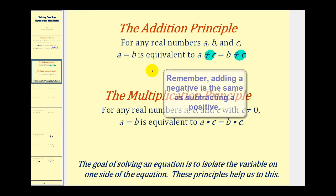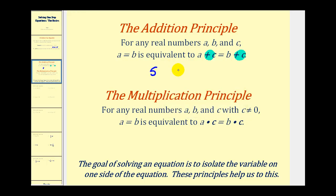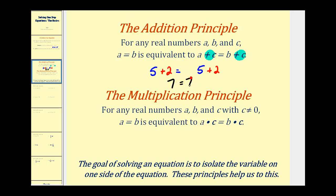For example, we know that five is equal to five. But if we decide to add two to both sides, the equation will still be true — now it will be seven equals seven.